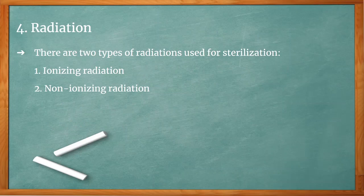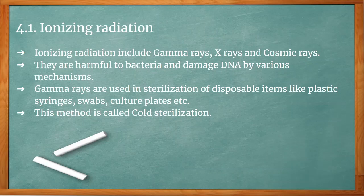The fourth method is radiation. There are two types used for sterilization: ionizing and non-ionizing radiation. Ionizing radiation includes gamma rays, X-rays, and cosmic rays. They are harmful to bacteria and damage DNA by different mechanisms. Gamma rays are used for sterilization of disposable items like plastic syringes, swabs, and culture plates. This method is called cold sterilization.